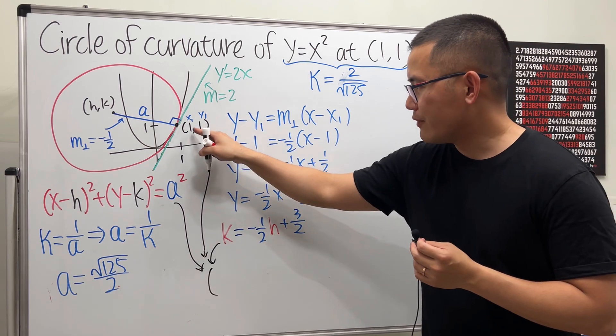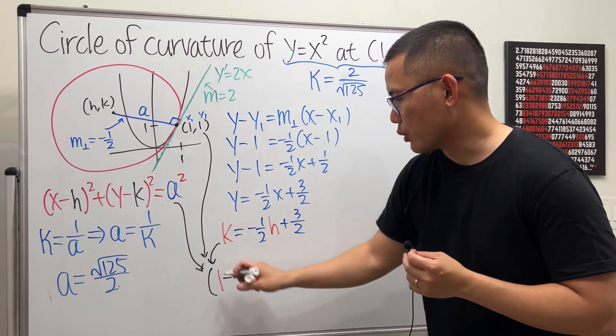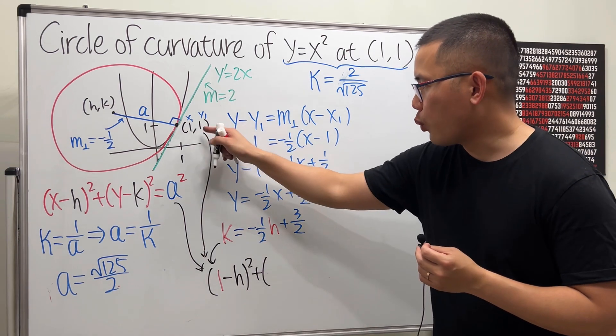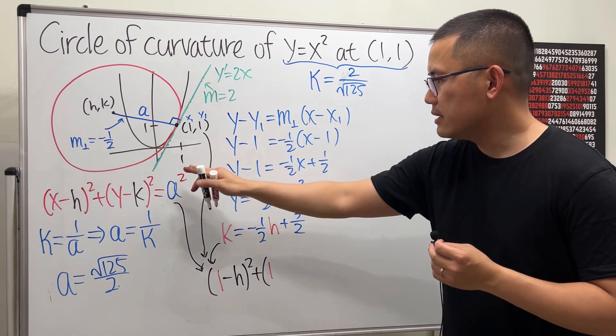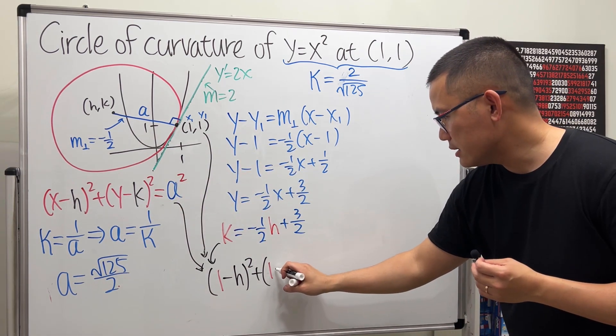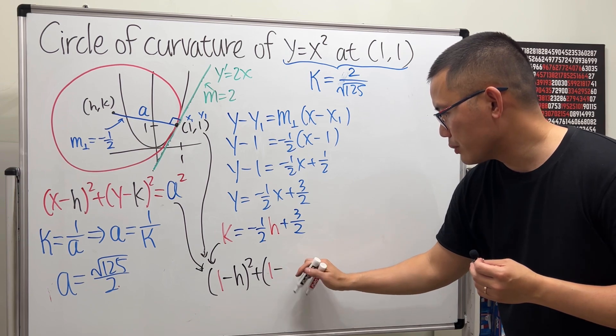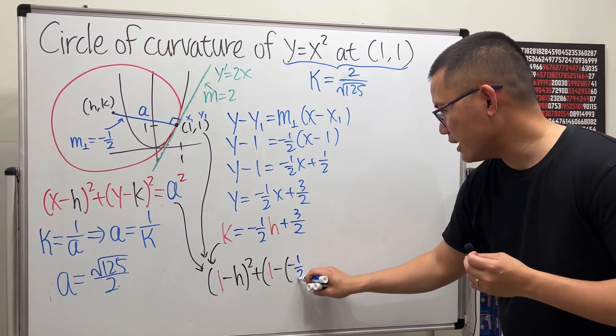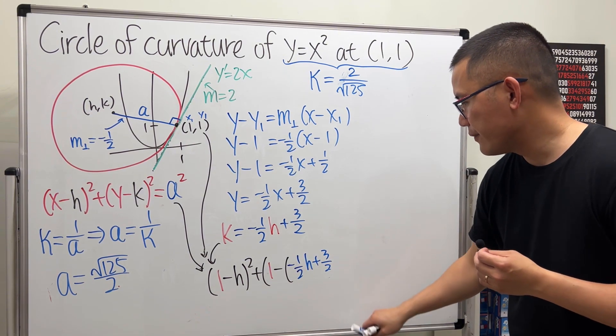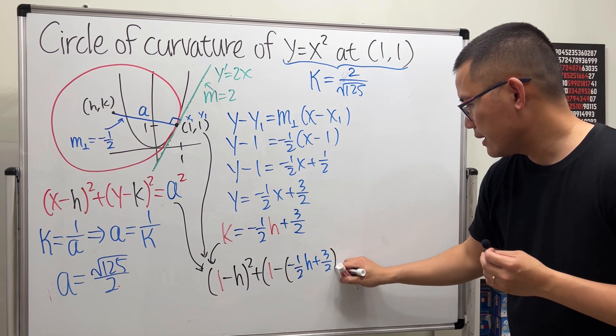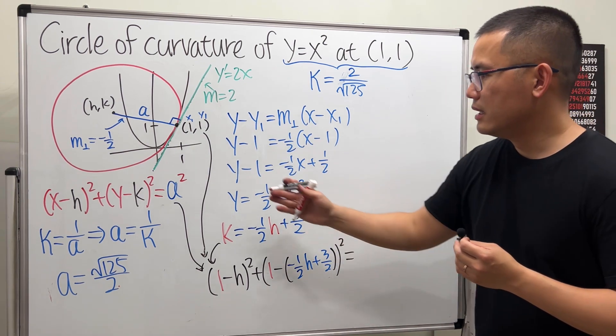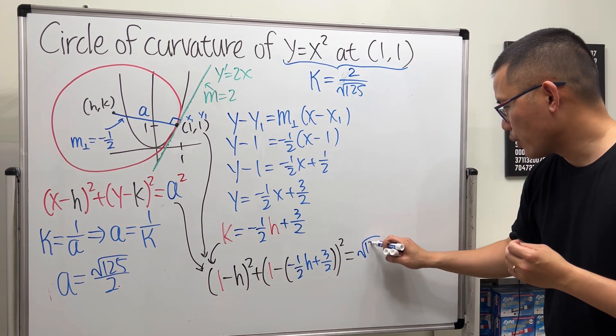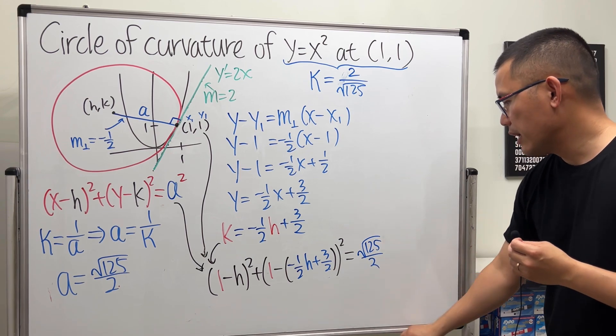So I will have 1 for x minus h, we don't know yet, squared plus y is 1 minus k, which is this. So I will say minus k. I will just put it down like this, which is in blue: negative 1/2 h plus 3/2, squared, equals a squared, which is that squared. So I will say square root of 125 over 2 and then square. So this is just going to be a quadratic equation in terms of h.